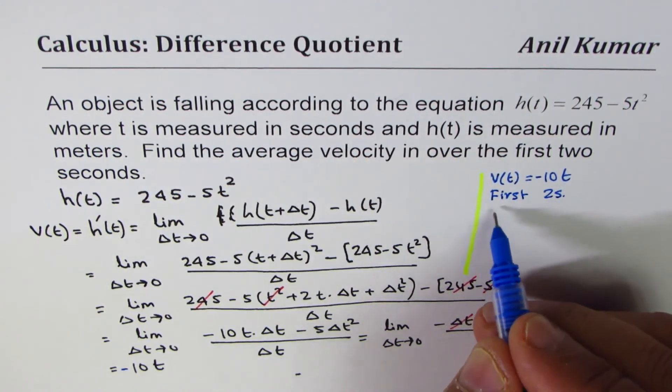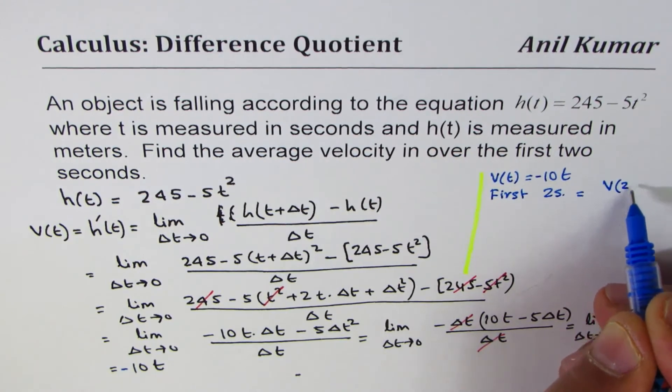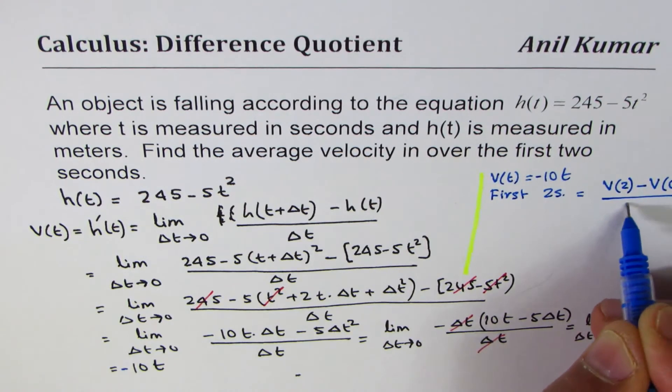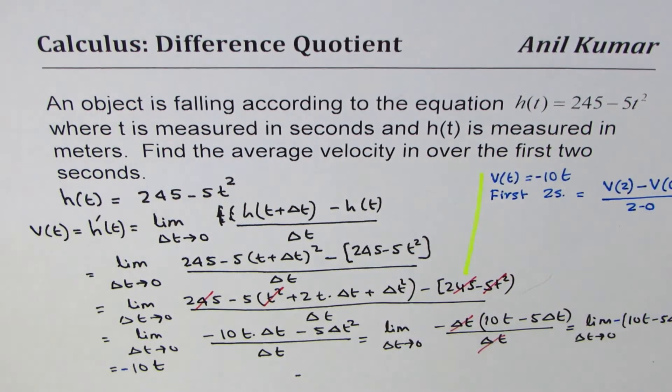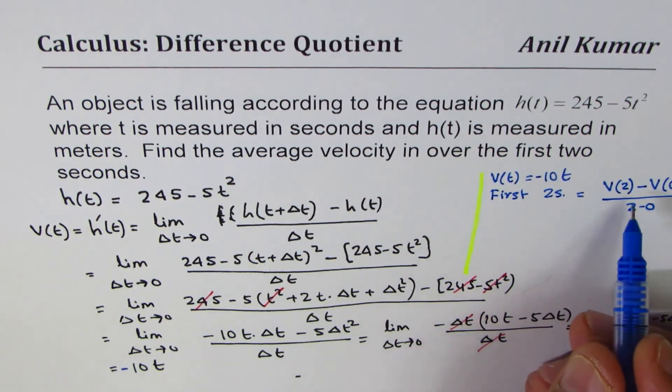So we are looking for average velocity, right? So that should be velocity at 2 minus velocity at 0 divided by 2 - 0. So that is the average velocity in first 2 seconds.